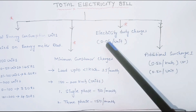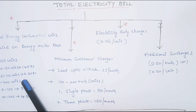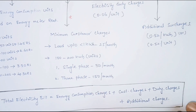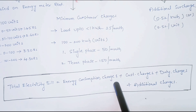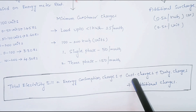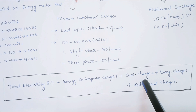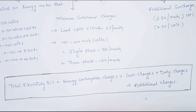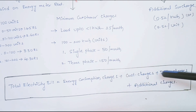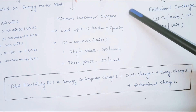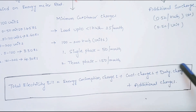To summarize: the total electricity bill equals energy consumption charges (what we use in domestic or commercial application) plus customer charges (compulsory every month, varying by supply category) plus electricity duty charges (also compulsory) plus additional surcharges. This combination of four charges makes up the total electricity bill.